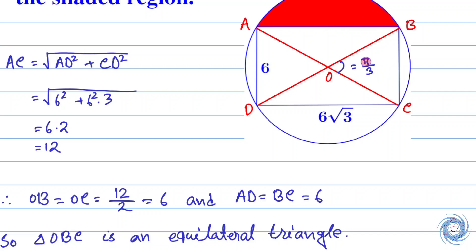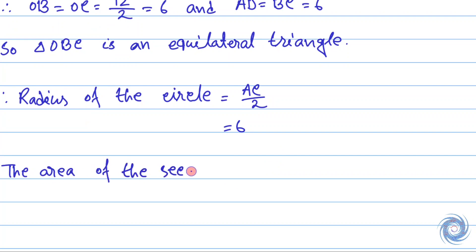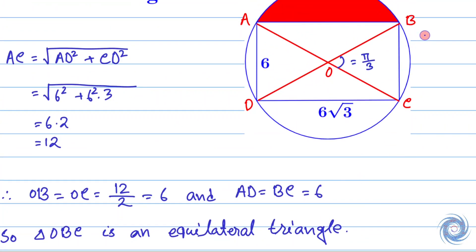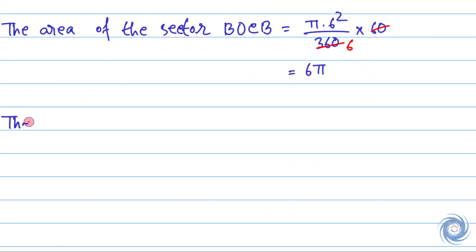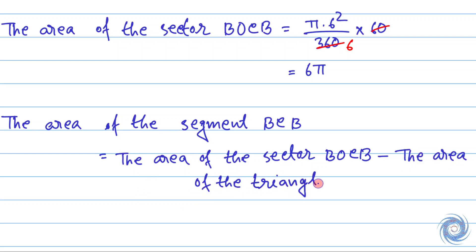Since angle BOC is 60 degrees, we can calculate the area of the sector BOCB. The area of the sector BOCB is 6π.